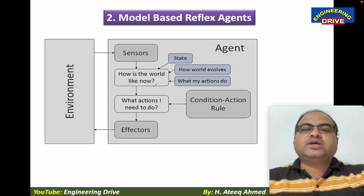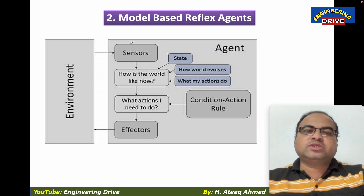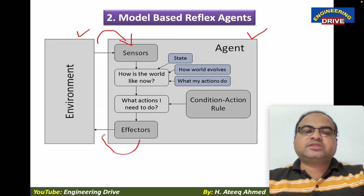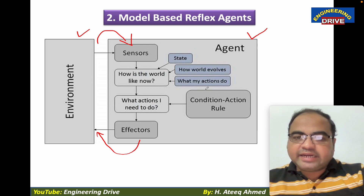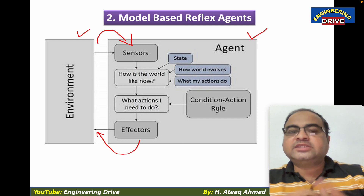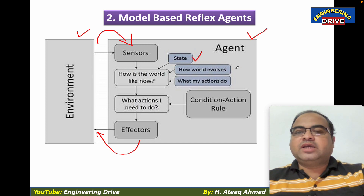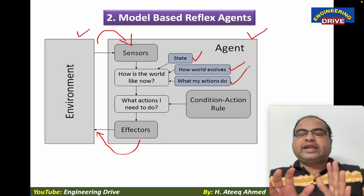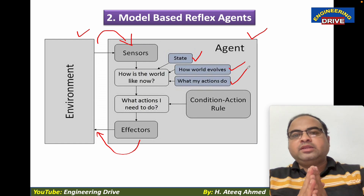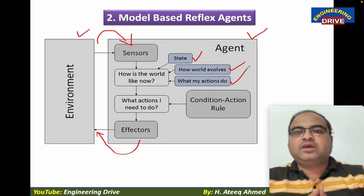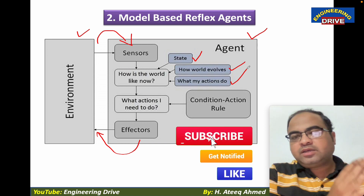Now let me show the diagram of model-based reflex agents. The diagram is almost the same as before with slight additions. As usual we have environment, agent, sensors, and effectors. There is a condition-action rule which we already understood from simple reflex agents. But along with that, three extra things are added: the internal state, the model of the world, and the estimation of what my actions do. These three additions play an important role in model-based reflex agents. Compared to simple reflex agents, model-based reflex agents can generate more positive actions and their success rate is quite higher.